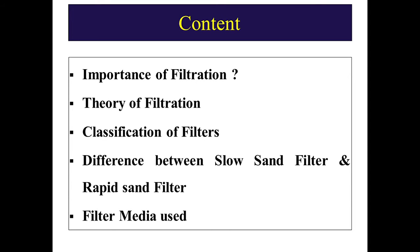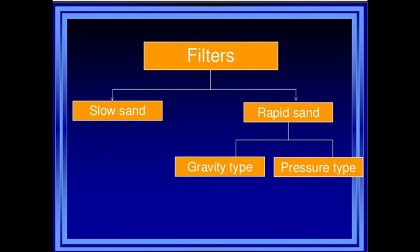Filters are classified into two groups: one is the slow sand filter and the second is the rapid sand filter. Rapid sand filters are again classified into two groups: one is the gravity type filter and the second is the pressure type filter.